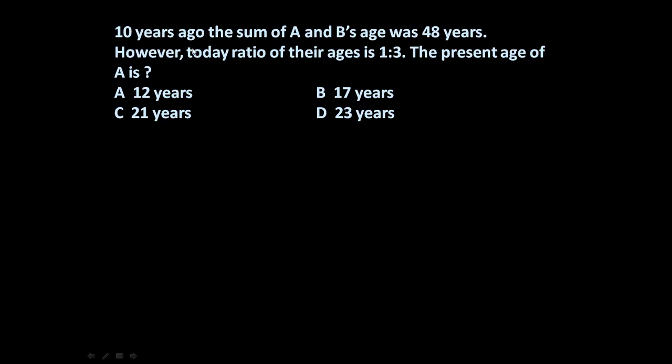Here the given problem is: 10 years ago the sum of A and B's age was 48 years. However, today ratio of their ages is 1 is to 3. The present age of A is? So let us start solving this problem.